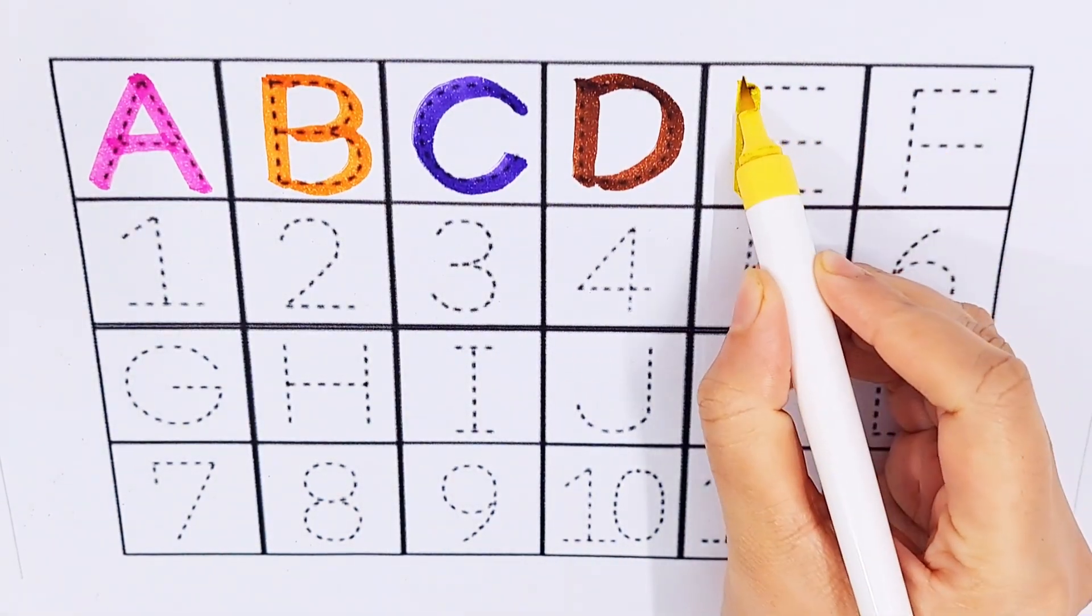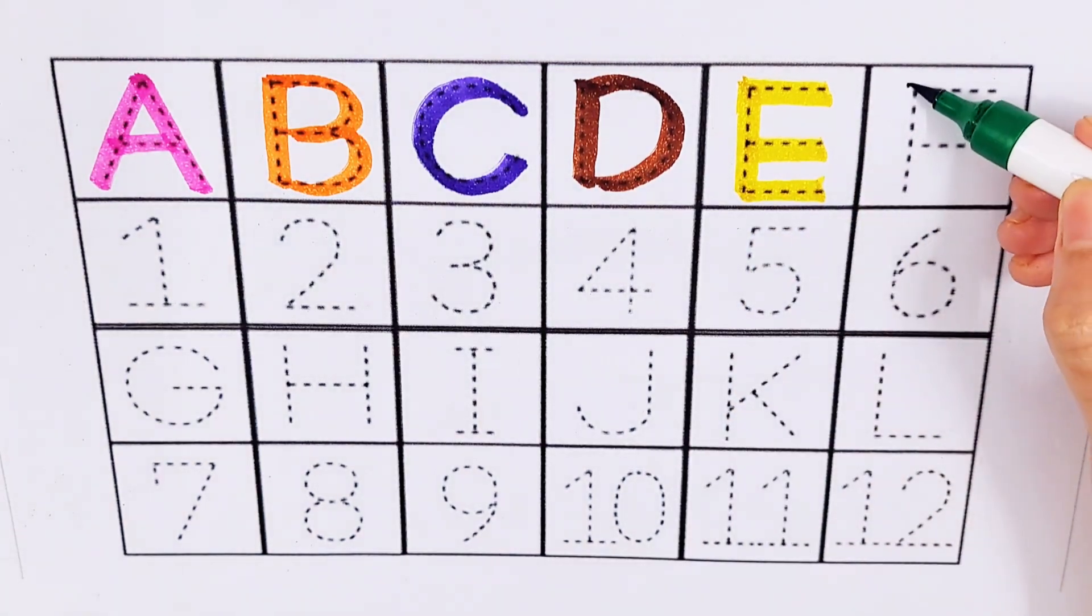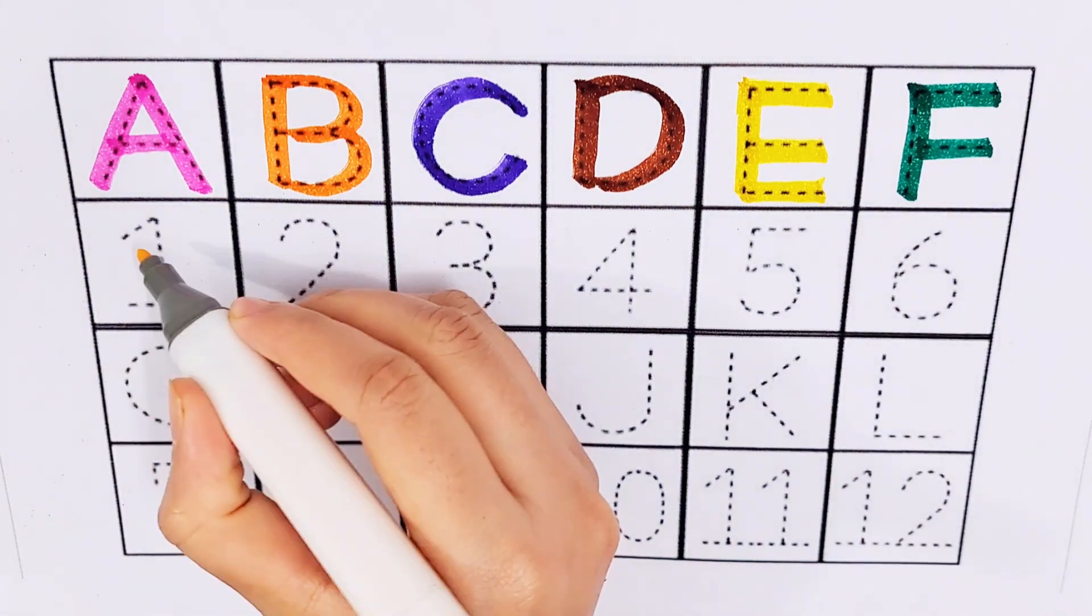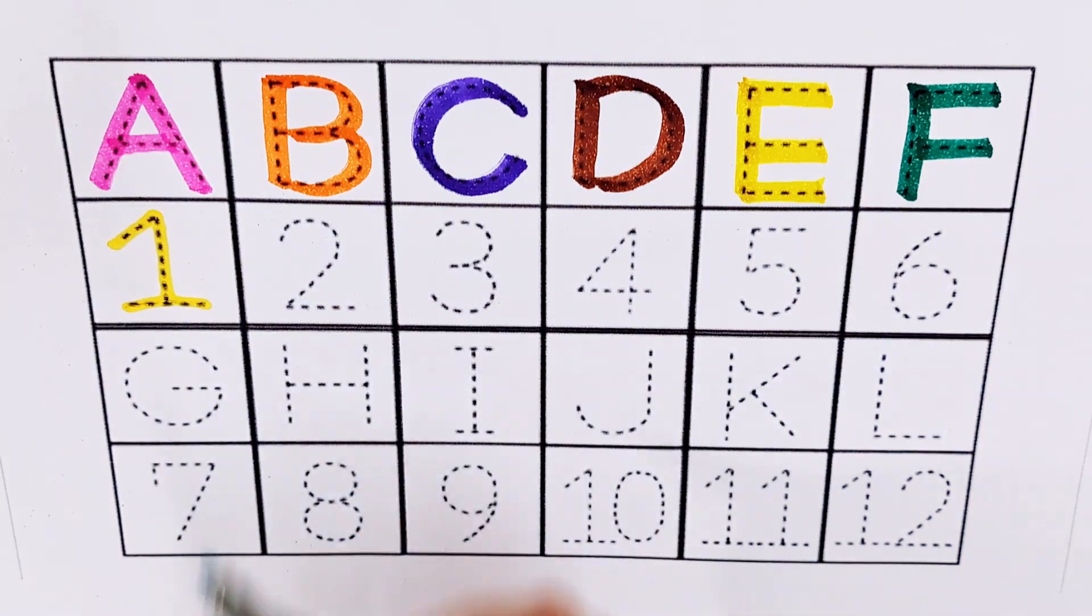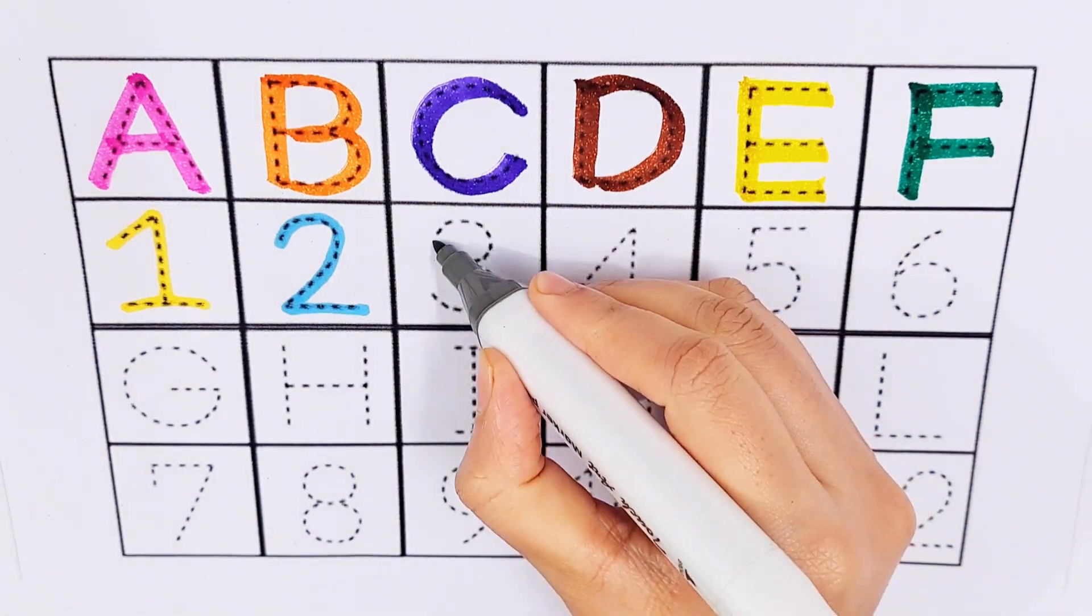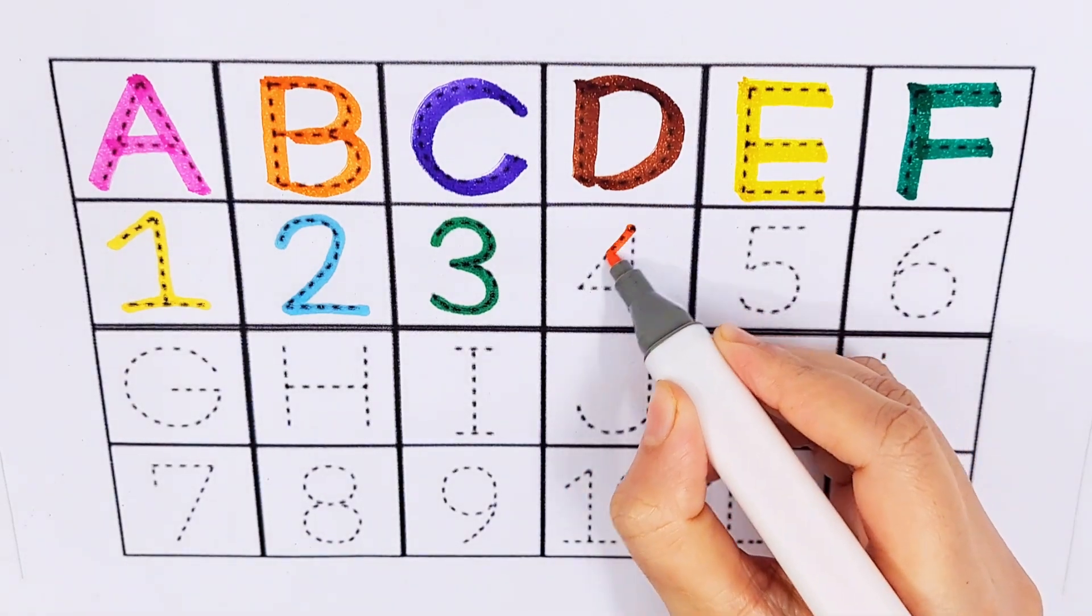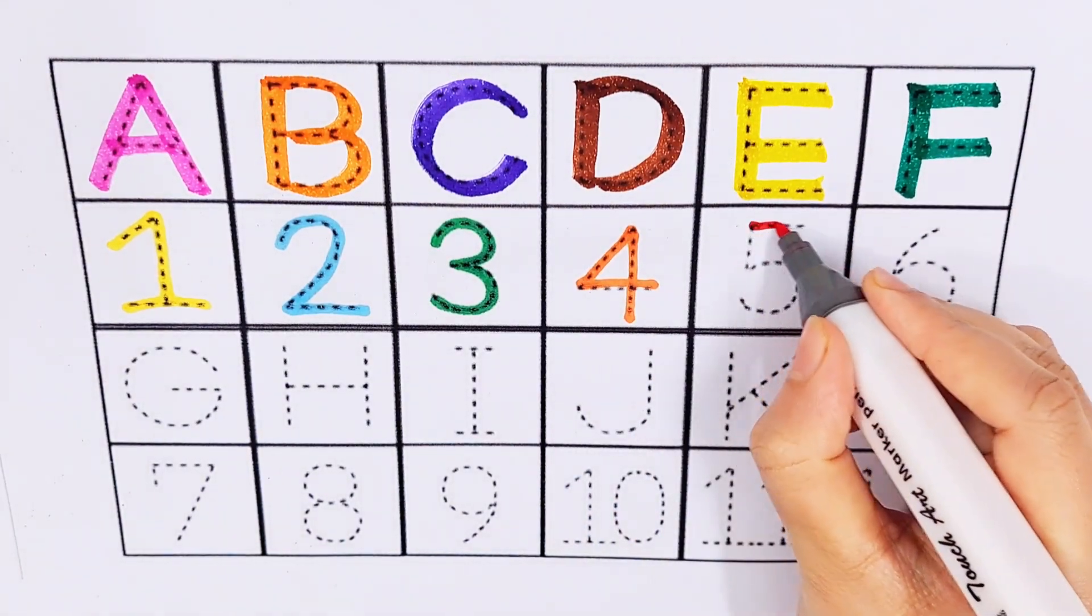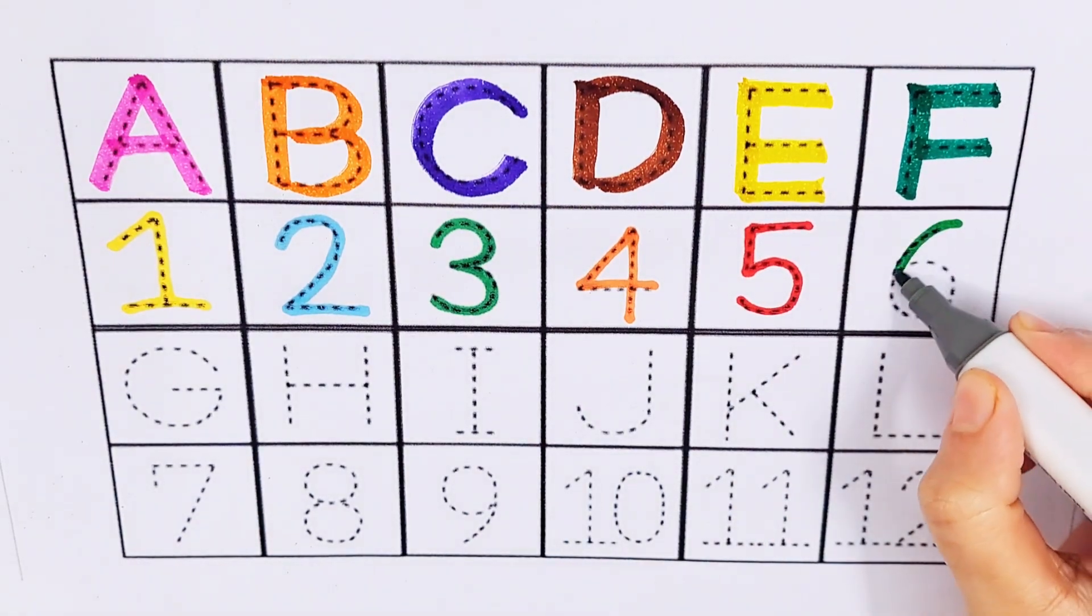E, E for egg. F, F for frog. Number one, A, B, C, D, E, F. Number two, number three, number four, number five, number six.